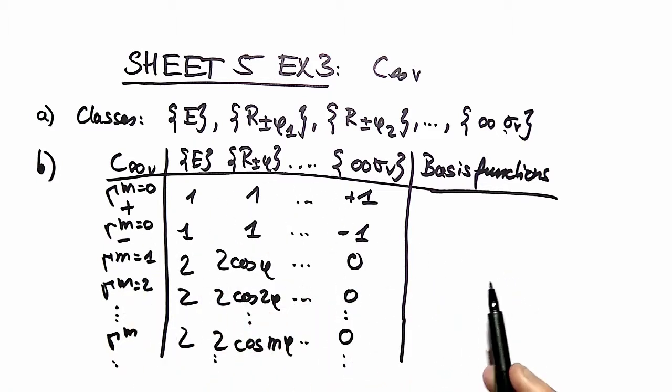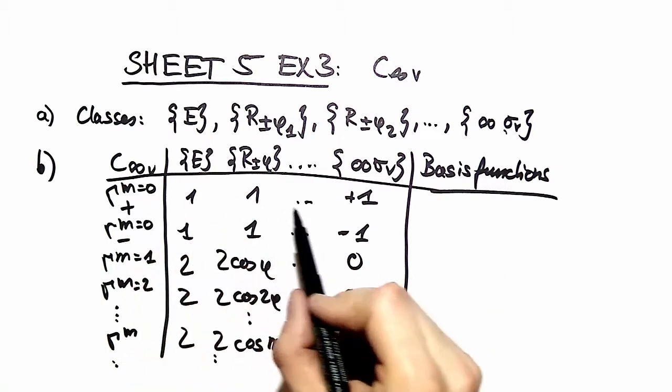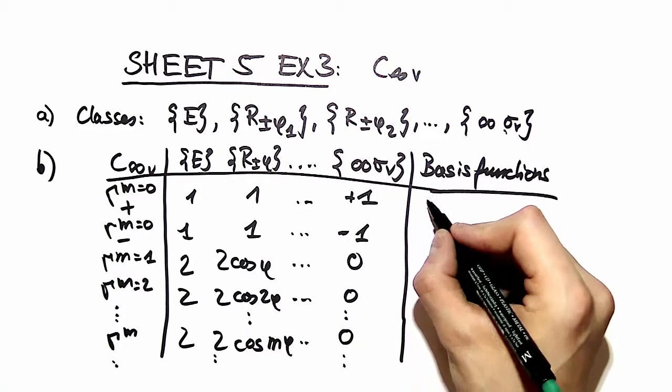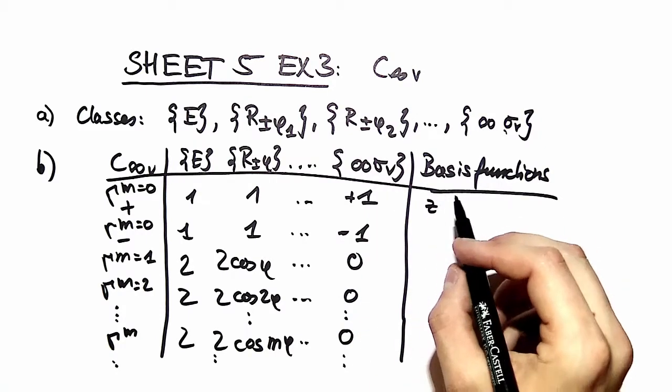It's kind of something between lucky guess or you should know it, but anyway. What is left invariant under any rotation, any reflection, is of course the screw axis which is z, so z must be a basis function.